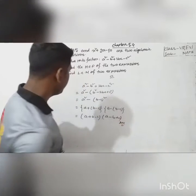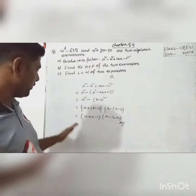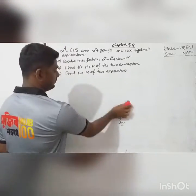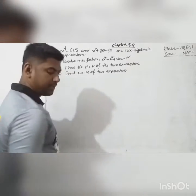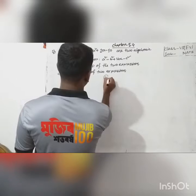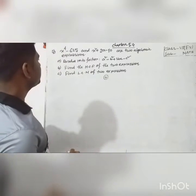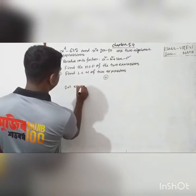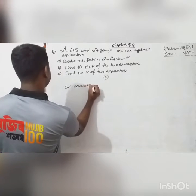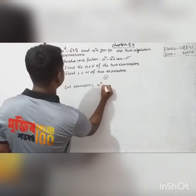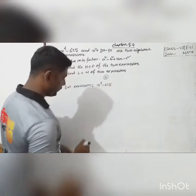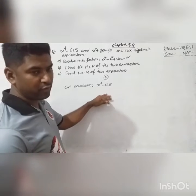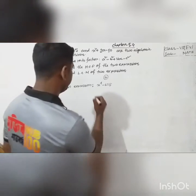This is the answer. I hope everybody understands this factorization. Now number B: find the HCF of the two expressions. The first expression is x⁴ minus 625. We apply the formula — x⁴ can be written as (x²)².